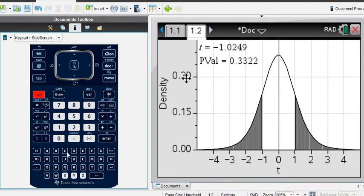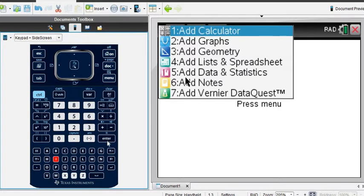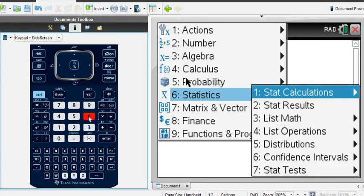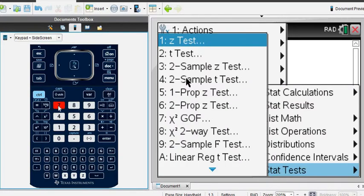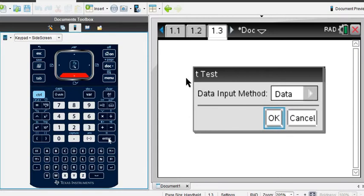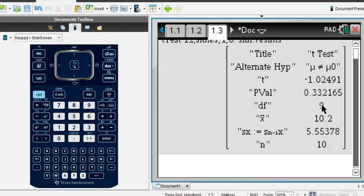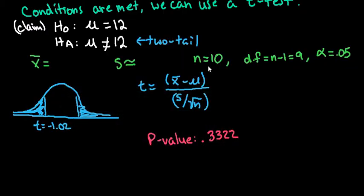If you have to show work, this is not good enough. Let me rerun this. In case you have to show the work, let me come back down here. We know that the answer is going to be negative 1.02 and we know that our p-value from that is 0.3322.